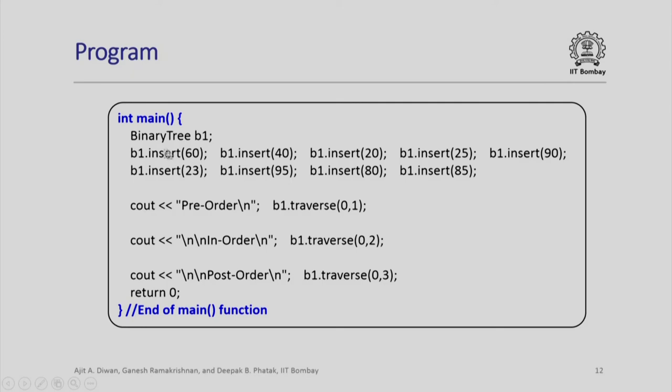Here is our main program. So binary tree is declared as b1. First of all, I will simply insert in this tree in the order in which they come. We assume that the values come in the order 60 followed by 40, followed by 20, followed by 25. Notice this is the same order in which we saw how the tree was getting constructed. We use insert, insert, insert, insert.